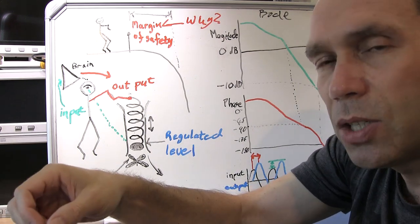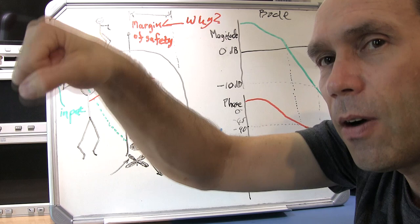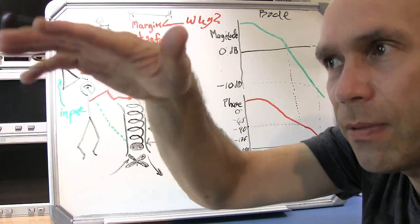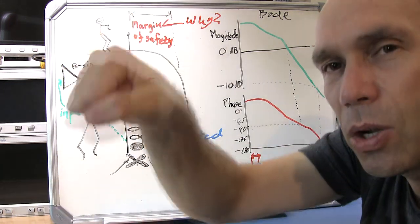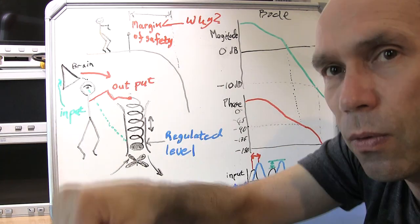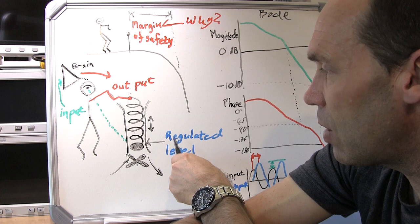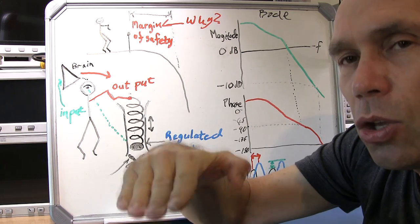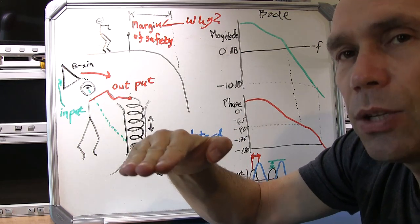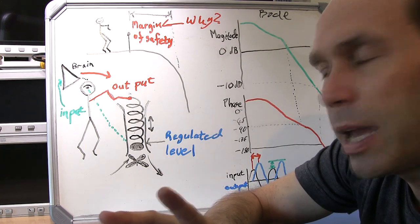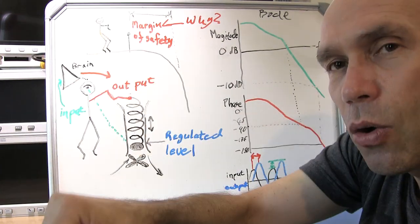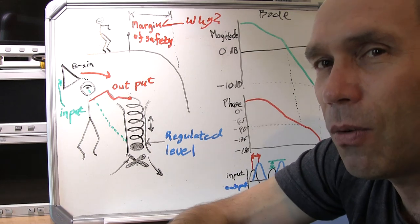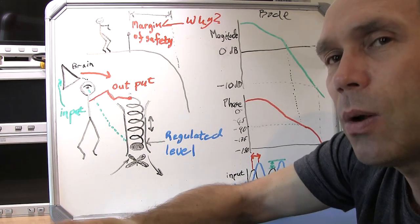Another way of compensating besides timing is the amount of force or movement you're putting in to correct the situation. Even with a slight delay, if you're putting in enough force you can still get back to a regulated level. However, if you're reacting fast enough but not putting in enough force, the output won't come up quickly enough. It's when both go against you — too much delay in your correction and not enough force — that things go awry.